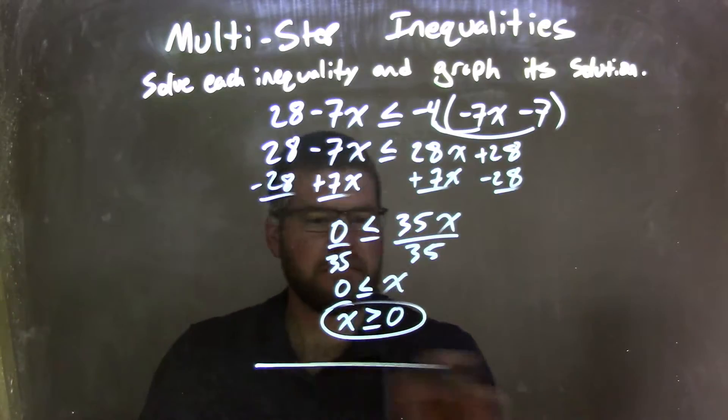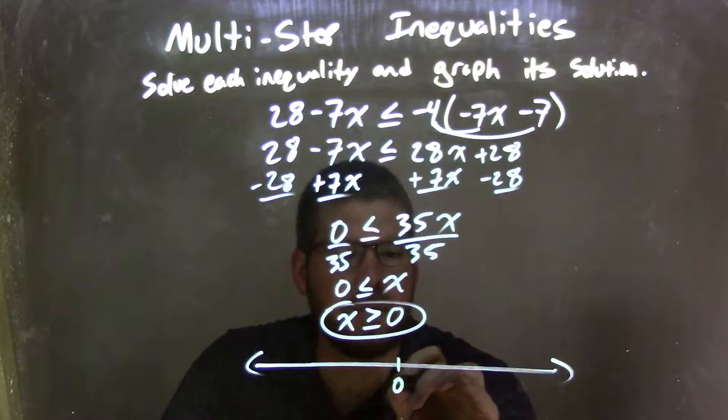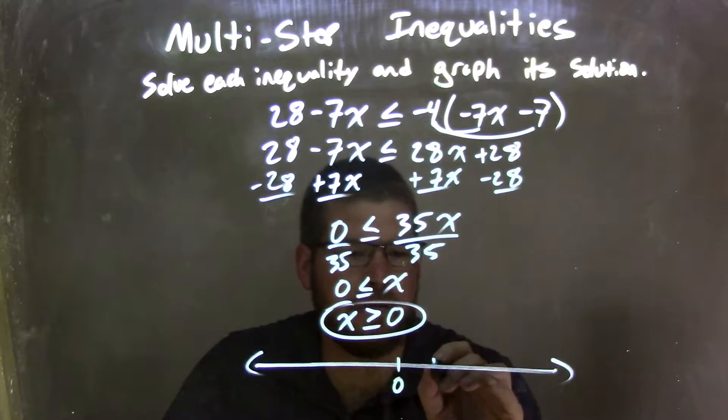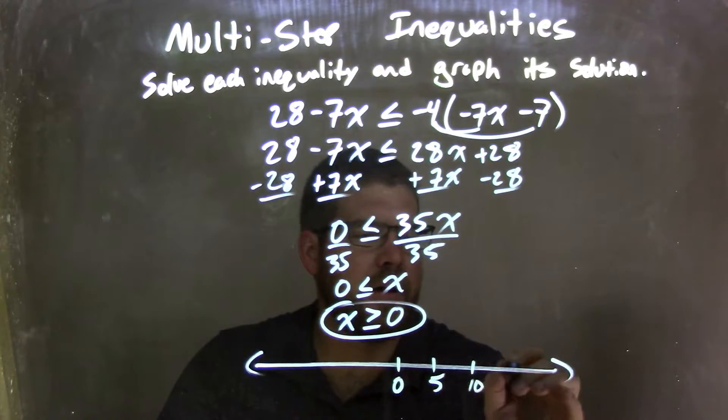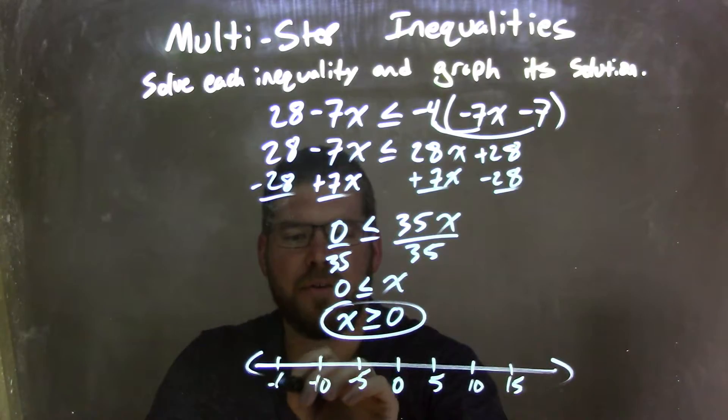So now we need to graph it. Pretty simple. Don't let the 0 scare you. The number line goes by 5s. 5, 10, 15. Negative 5, negative 10, negative 15.